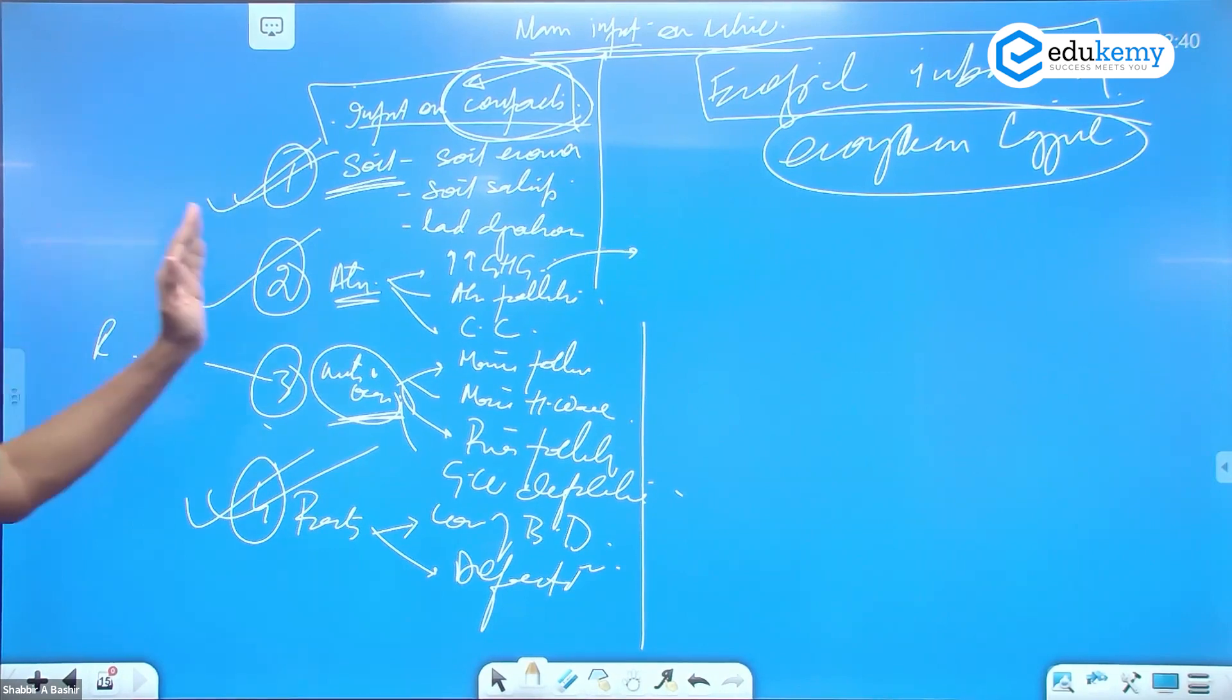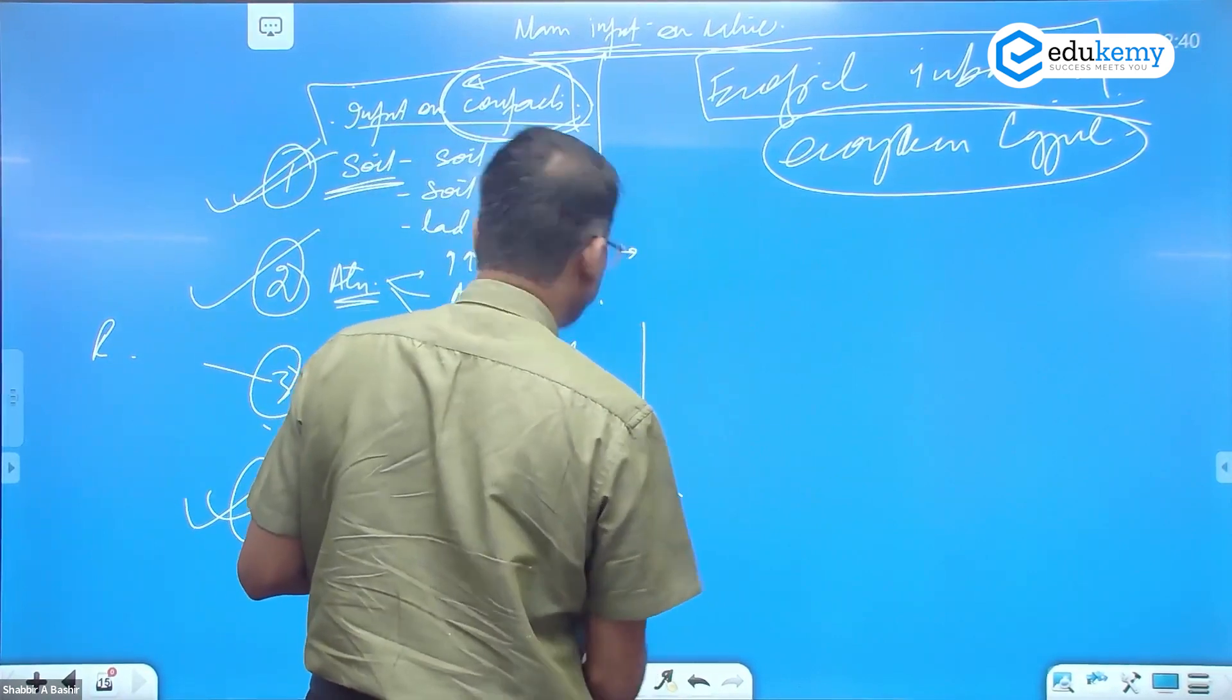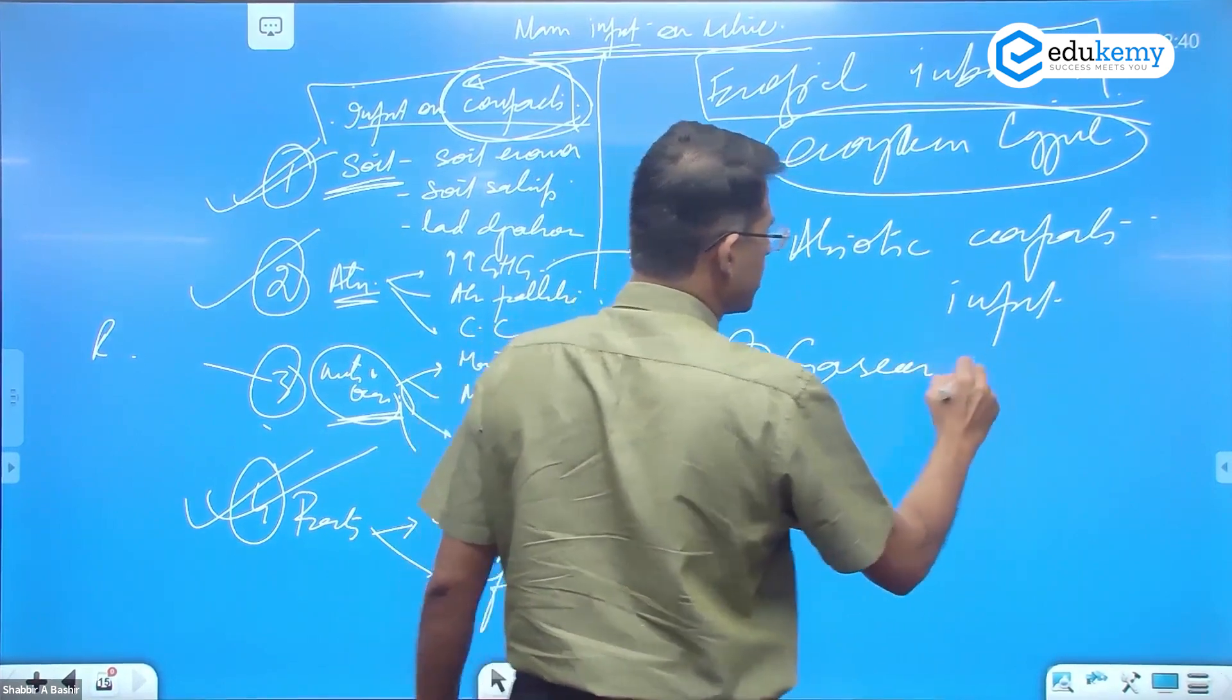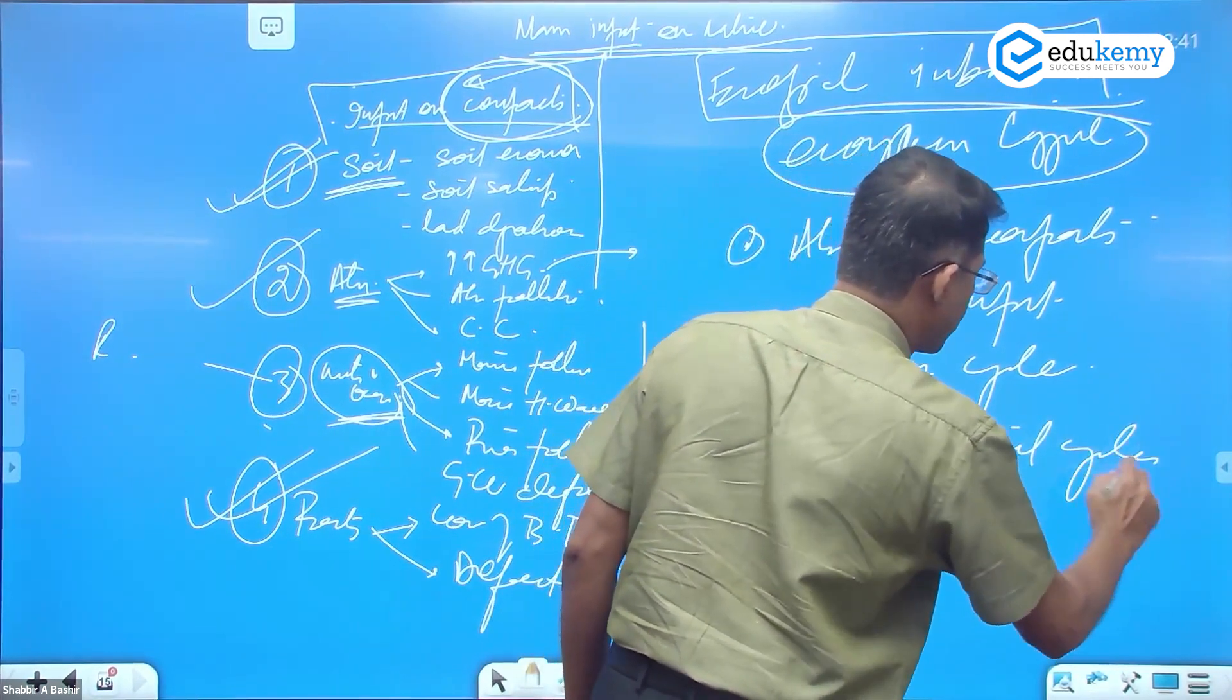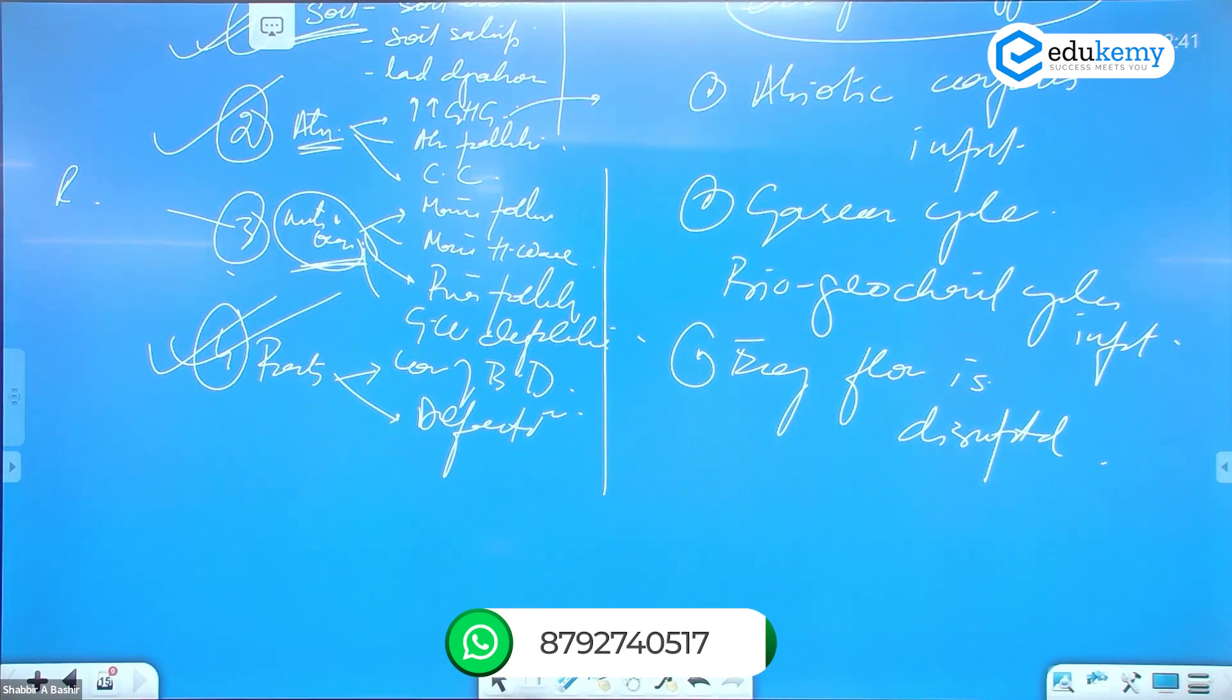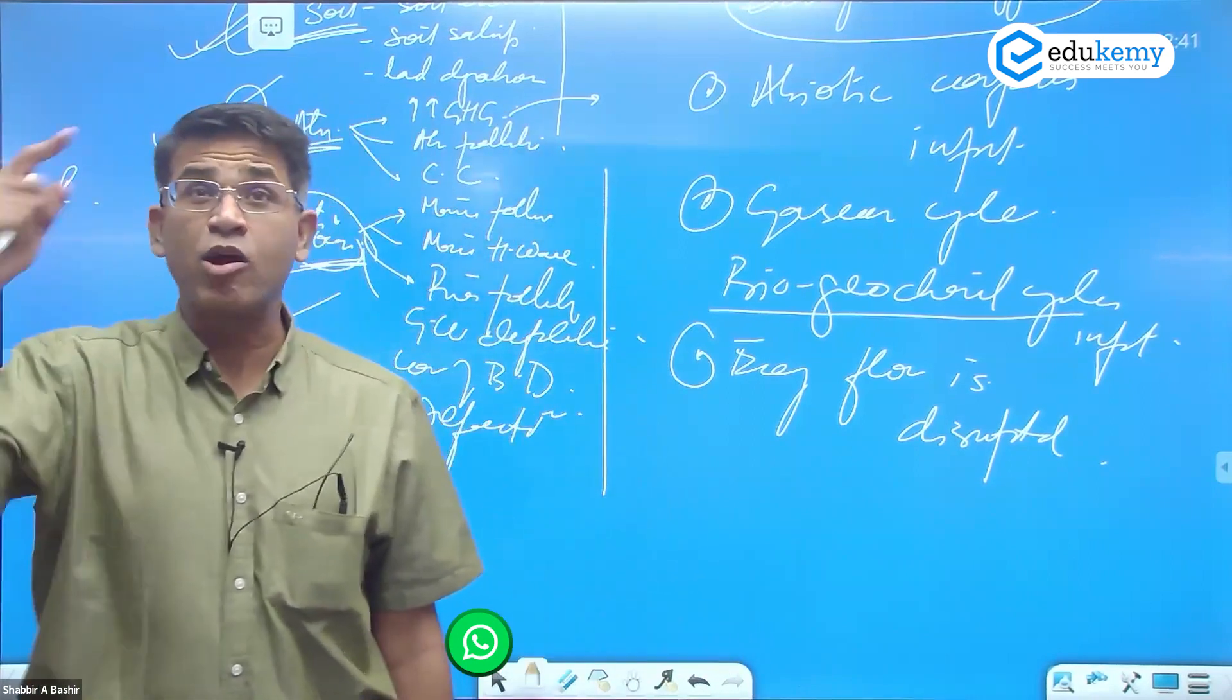How does man impact nature? Talk about it in terms of ecological imbalances, in terms of ecosystems language. So when we discuss soil depletion, we talk in terms of abiotic components being impacted. We'll talk about the gaseous cycles and the biogeochemical cycles being impacted. The energy flow is disrupted.